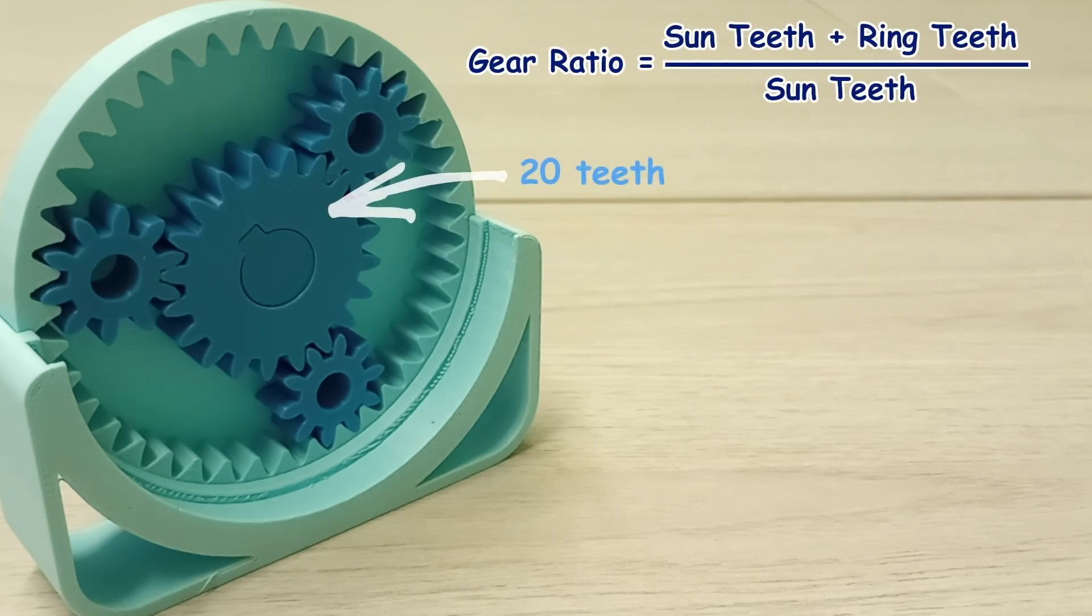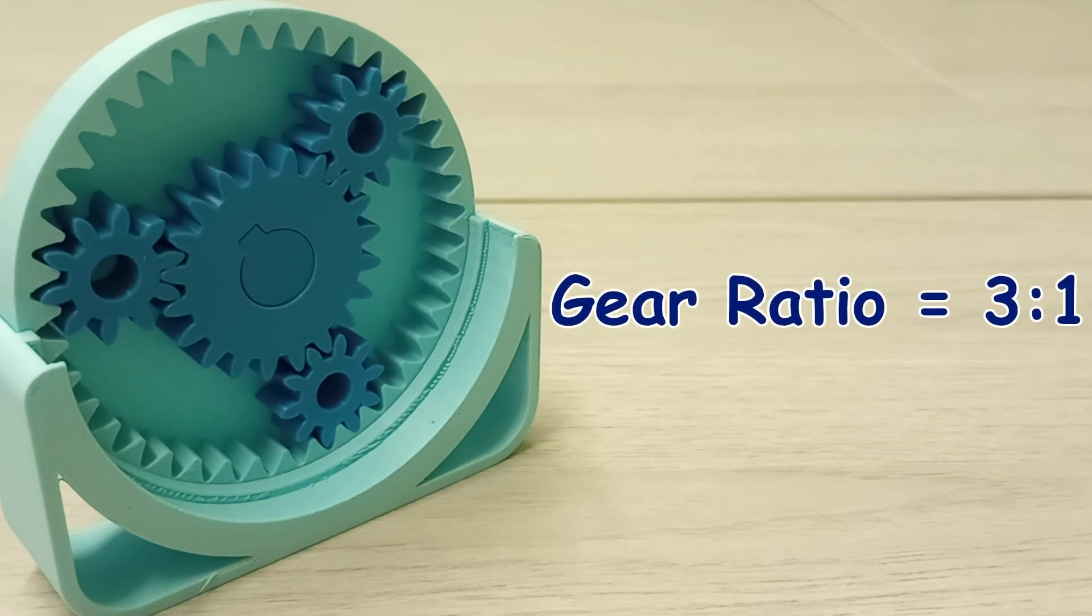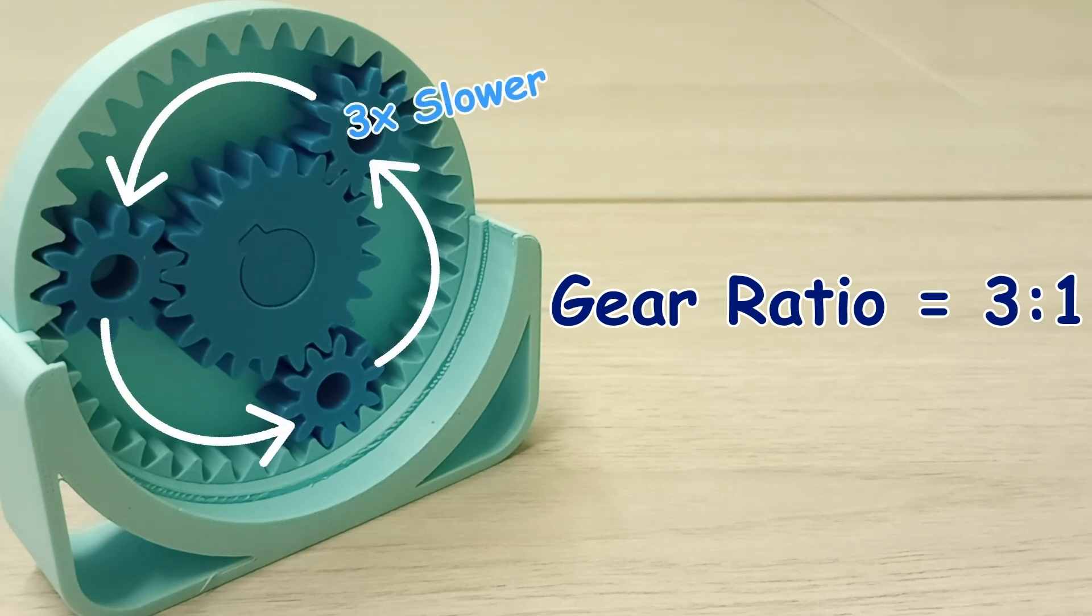The sun gear has a total of 20 teeth and the ring gear has a total of 40 teeth. And plugging those numbers in we should get a ratio of 3 to 1. And that means that the planetary gears are rotating three times slower than the sun gear is.